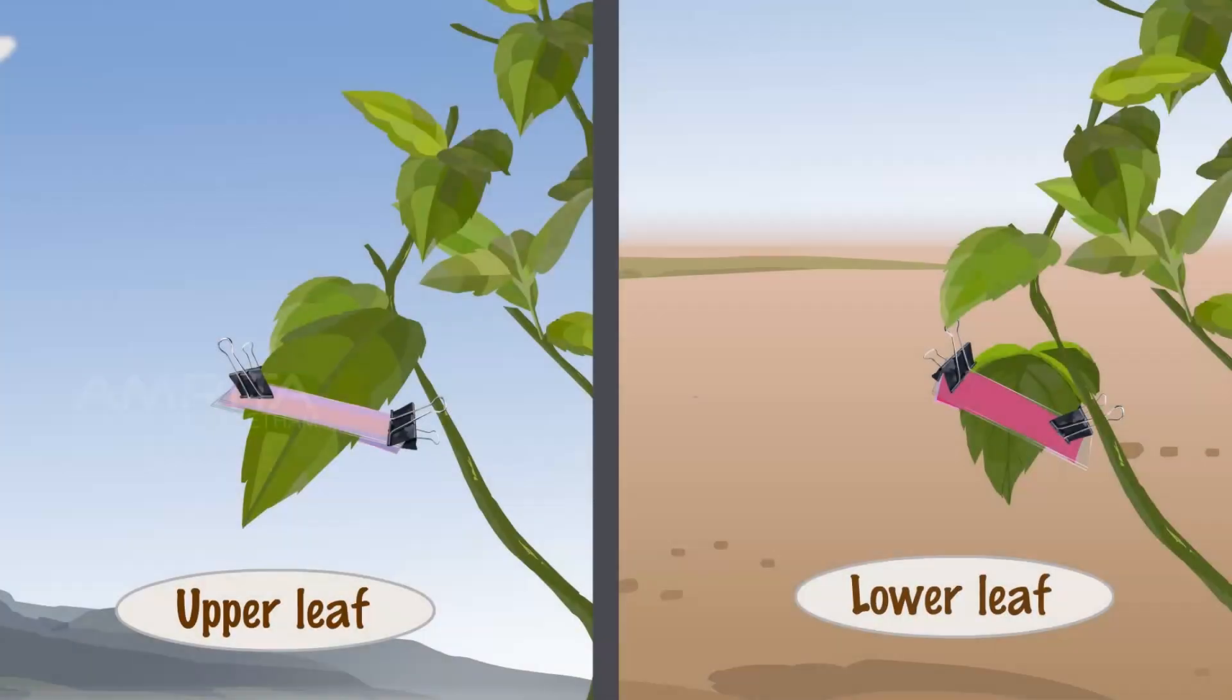Observation. After 15 minutes, the colour of the cobalt chloride paper on the lower leaf surface changes from blue to pink and on the upper surface it changes to partial pink colour.